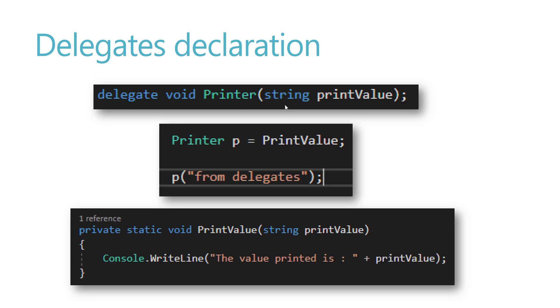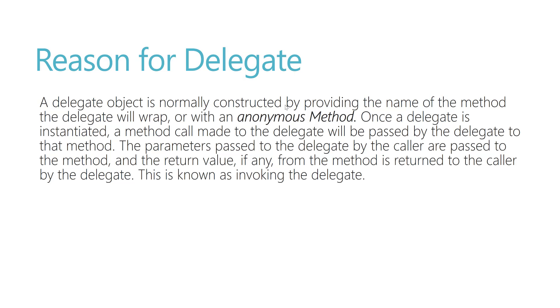Why do we really require delegates in the first place? A delegate object is normally constructed by providing the name of the method it will wrap, or with an anonymous method. Once a delegate is instantiated, a method call made to the delegate will be passed by the delegate to that method. The parameters passed to the delegate by the callers are passed to the method, and the return values from the method are returned to the caller by the delegate. This is known as invoking the delegate.